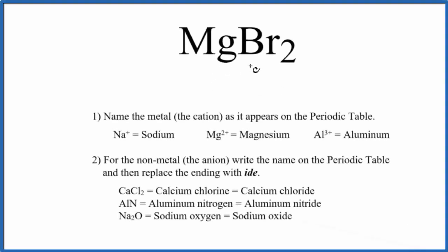To write the name for MgBr2, we first need to realize that this is an ionic compound. That's because we have a metal and a non-metal bonded together. Metal and non-metal, that's ionic.